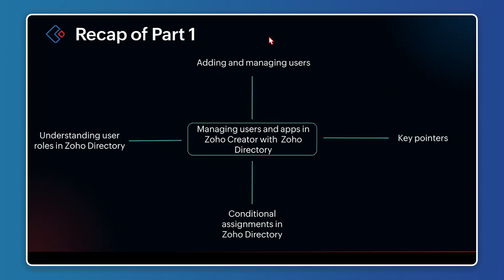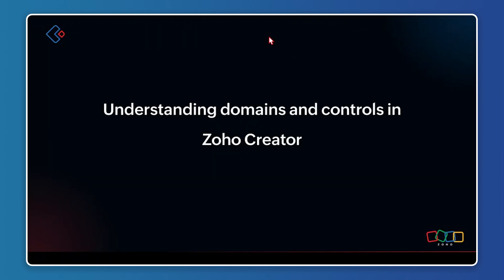Let's look at today's agenda. First, we'll have a recap of part one from last month, then delve into understanding domains and controls available in Zoho Directory. We'll talk about security features and how to configure them, custom authentication in Zoho Creator, live demonstrations, and key pointers to note while working with domains, controls, and security features. Last session we discussed managing users and applications in Zoho Creator and Zoho Directory, and how sync between the two happens in real time, conditional assignments, and key pointers.